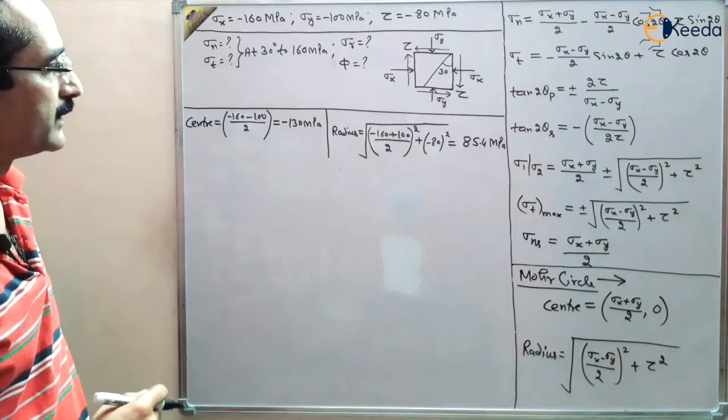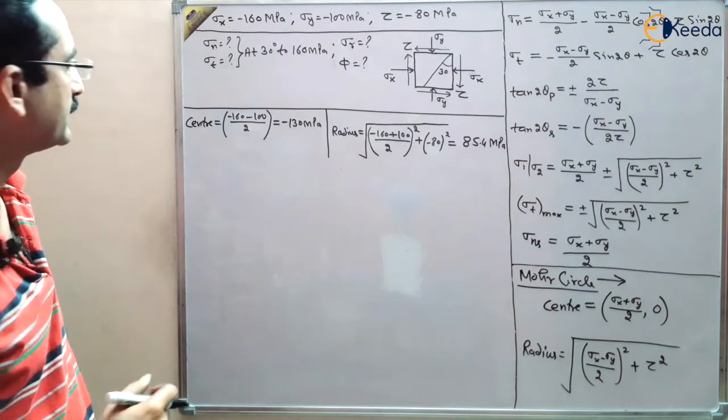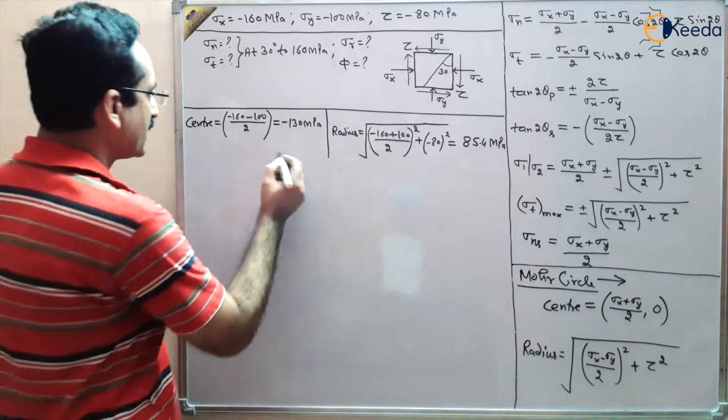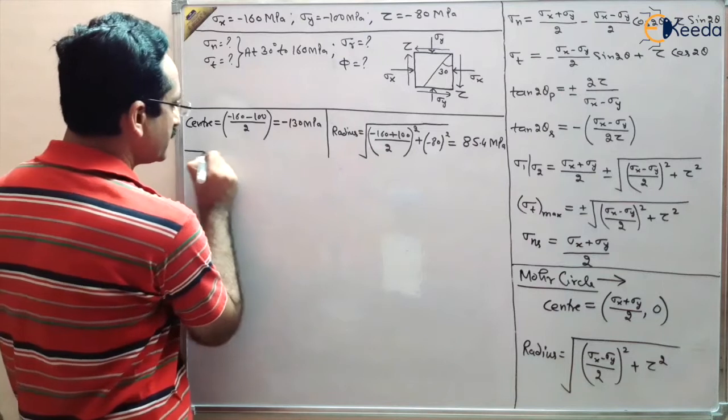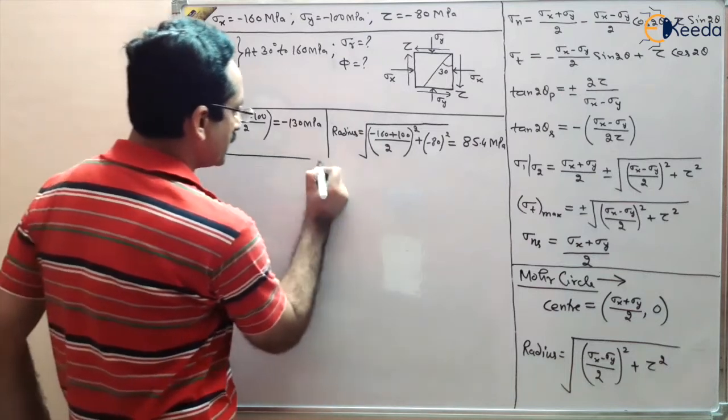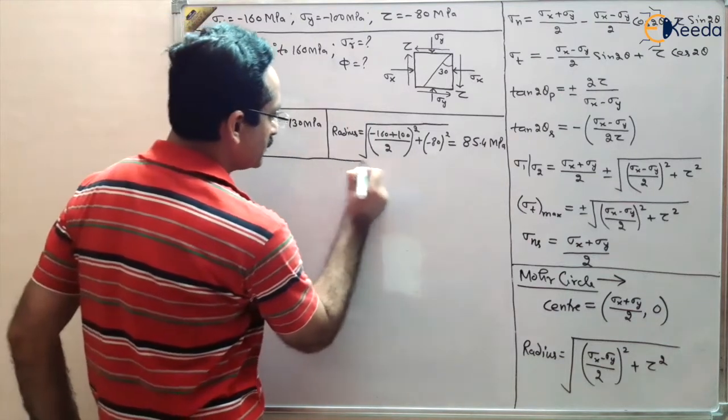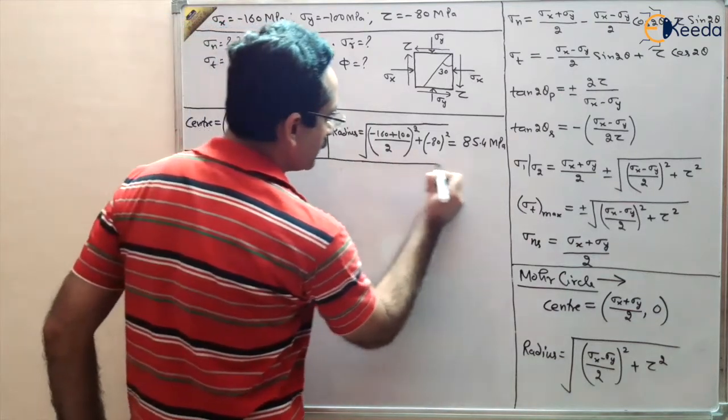The radius is calculated as the square root of ((sigma_x - sigma_y)/2)² + tau². With tau = -80 MPa, solving using a calculator gives the radius as 85.4 MPa. These are the required values to construct the Mohr circle.